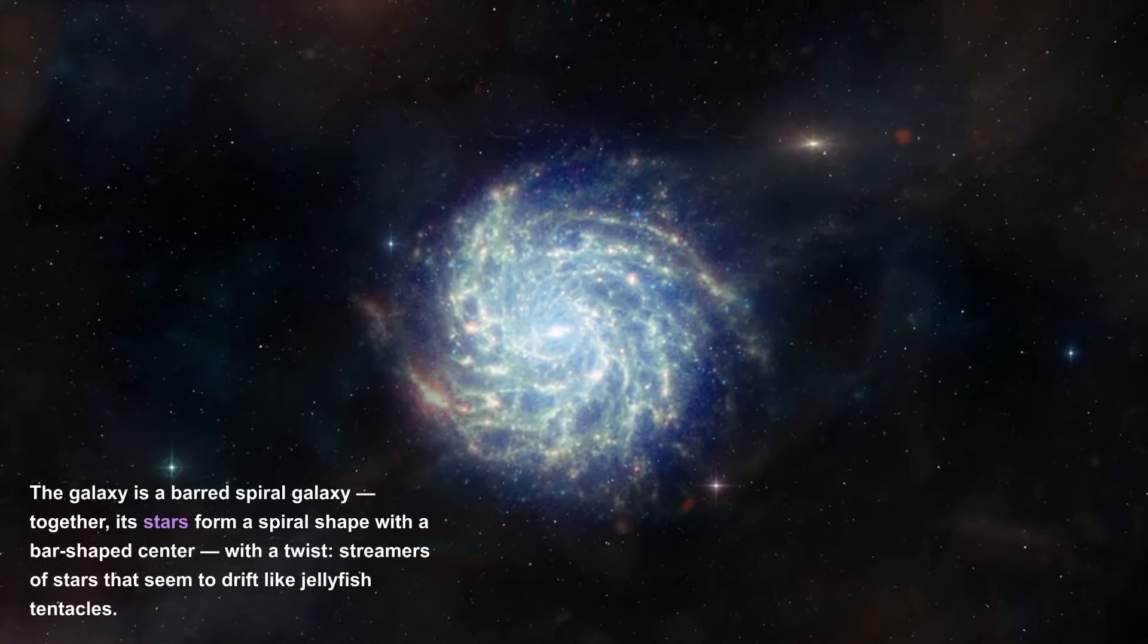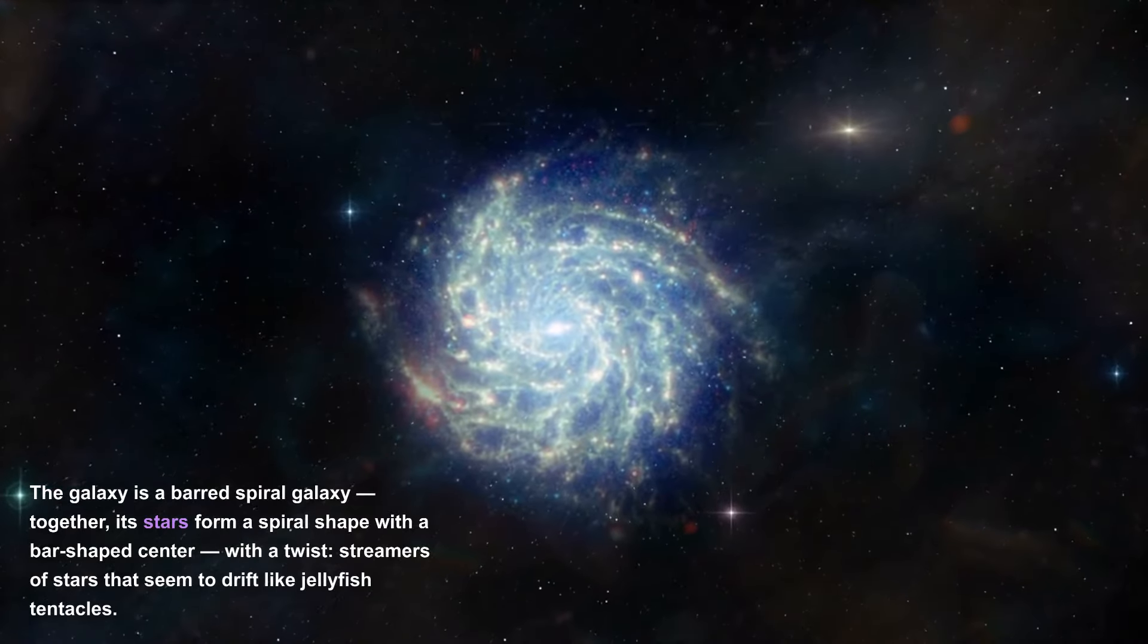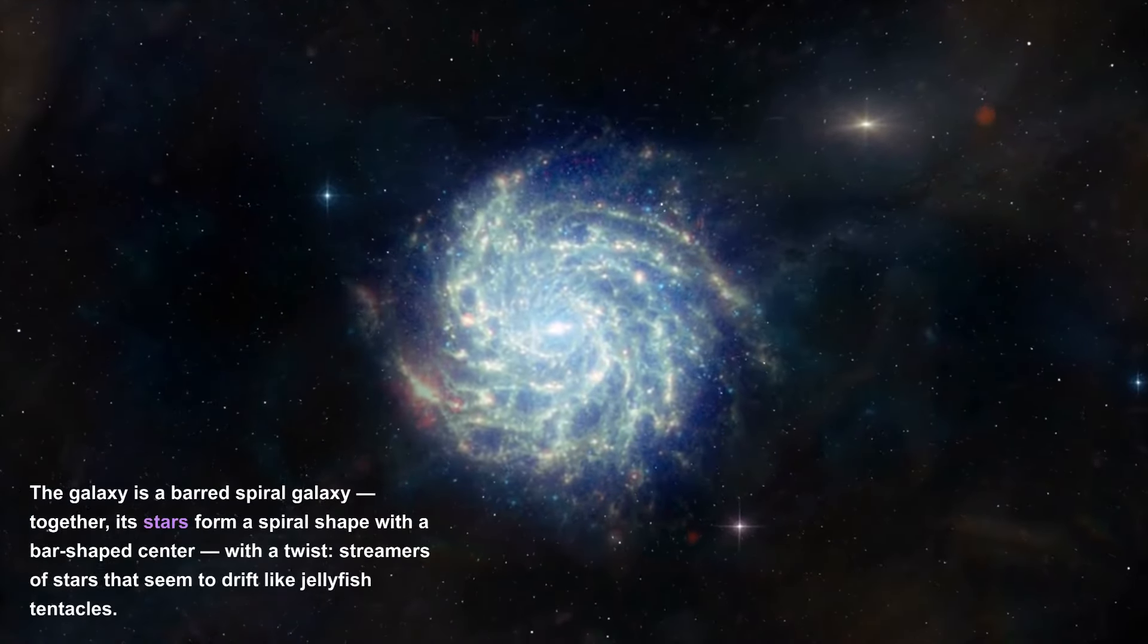The galaxy is a barred spiral galaxy. Together, its stars form a spiral shape with a bar-shaped center, with a twist: streamers of stars that seem to drift like jellyfish tentacles.